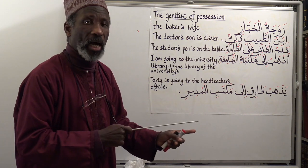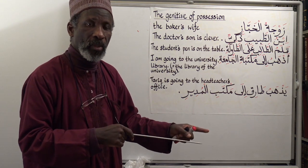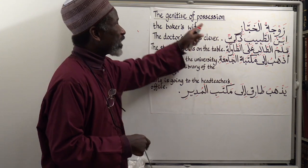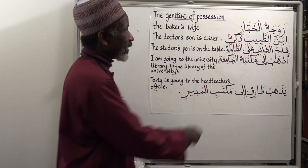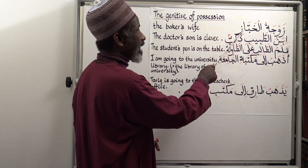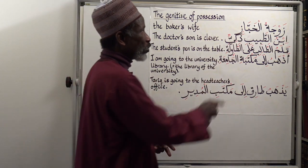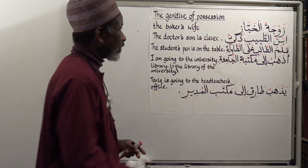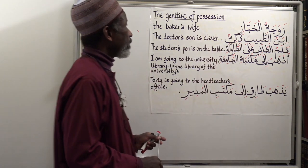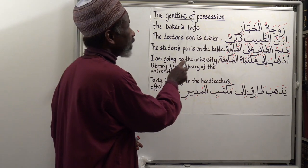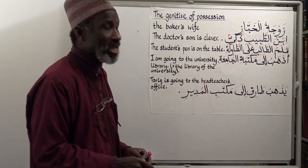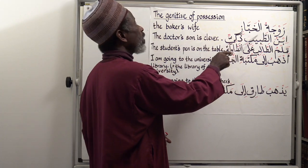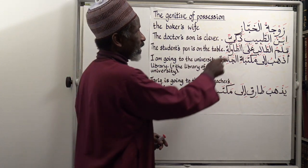Let's have a look at this now to confirm what I have just explained regarding the genitive of possession. Zawjatu — that's 'the wife' — and then al-khabbazi, 'baker's.' So: the baker's wife, meaning the wife belonging to the baker. Look at this now: you have a single default vowel, dhamma — zawjatu — so zawjatu is defined and is ending in a single kasra: al-khabbazi.